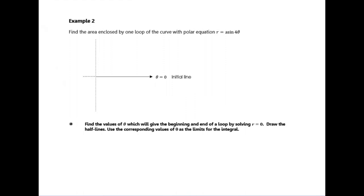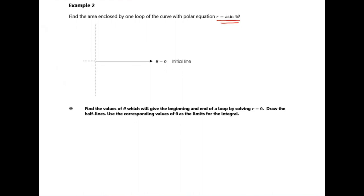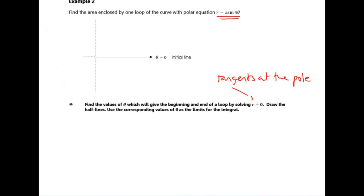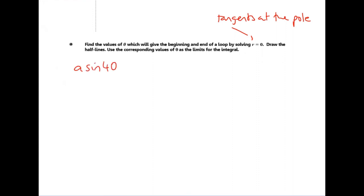Example two says find the area enclosed by one loop of the curve with the polar equation r equals A sine four theta. It's going to be one of these loopy petal ones, but we only need the first loop. The first thing we're going to do is find the values of theta which give the beginning and end of the loop by solving r equals zero, since r equals zero gives you the tangents at the pole. So that's A sine four theta equals zero. The A obviously doesn't matter, and you can inverse sine to get four theta equals zero for the first solution, and four theta equals pi for the second.